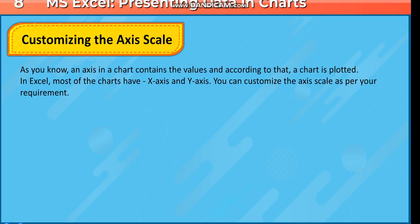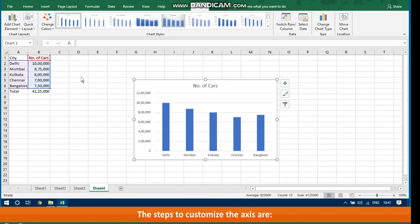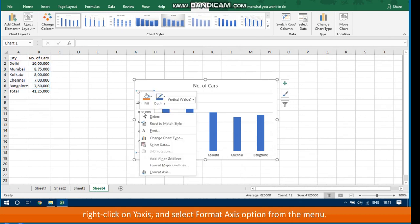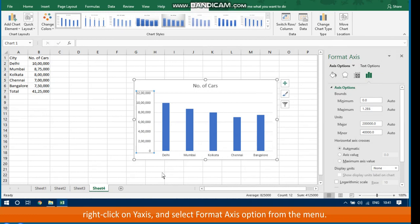As you know, an axis in a chart contains the values and according to that, a chart is plotted. In Excel, most charts have an X-axis and Y-axis, and you can customize the axis scale as per your requirement. The steps to customize the axis are: point the mouse and right-click on the value axis — for example, right-click on the Y-axis — and select the Format Axis option from the menu.